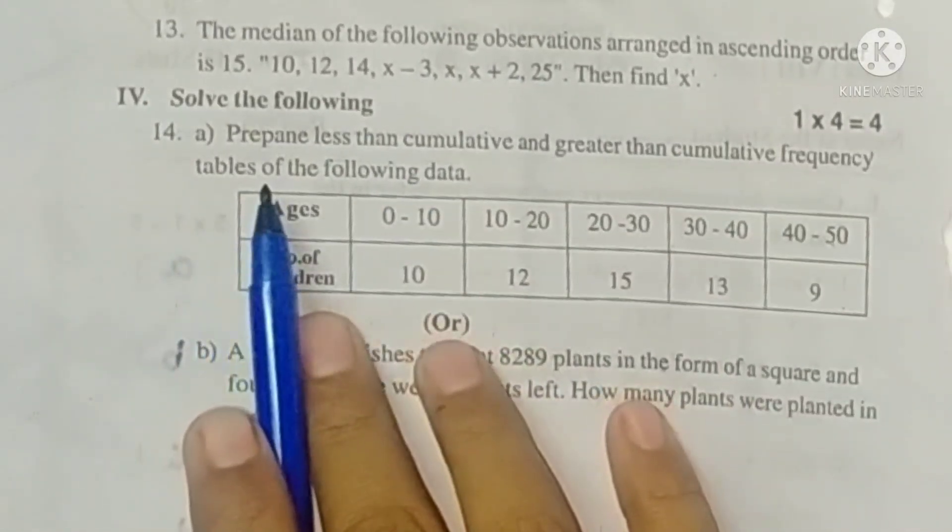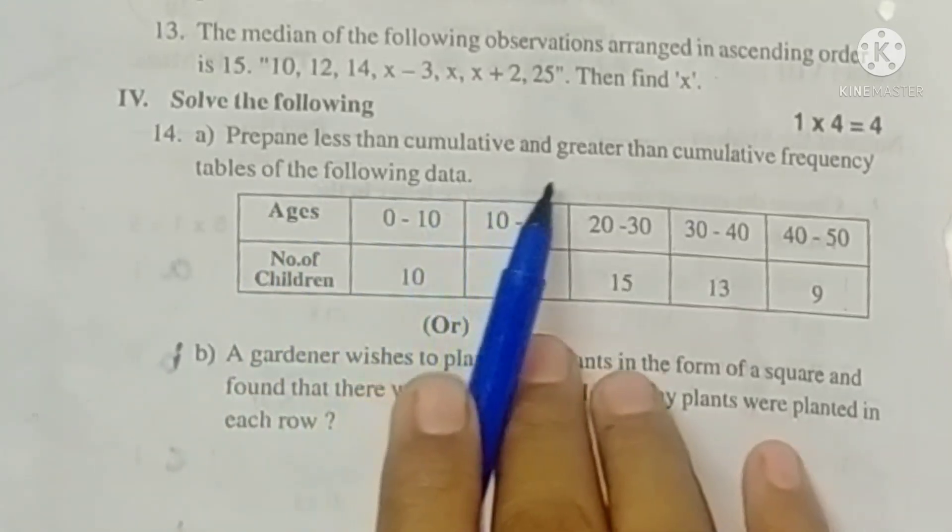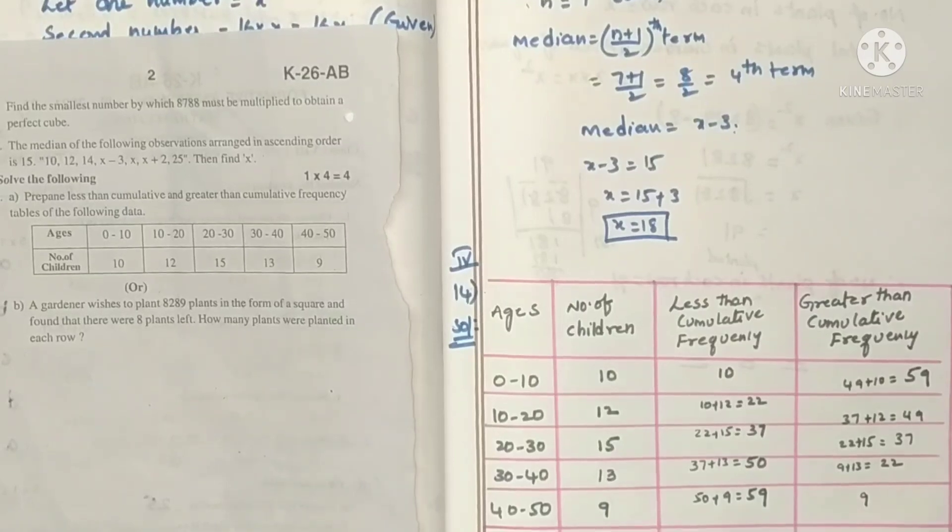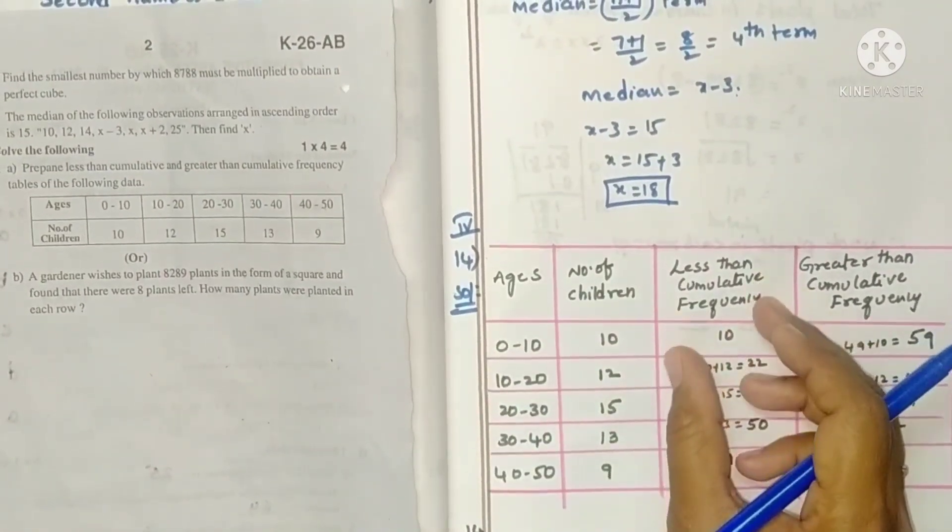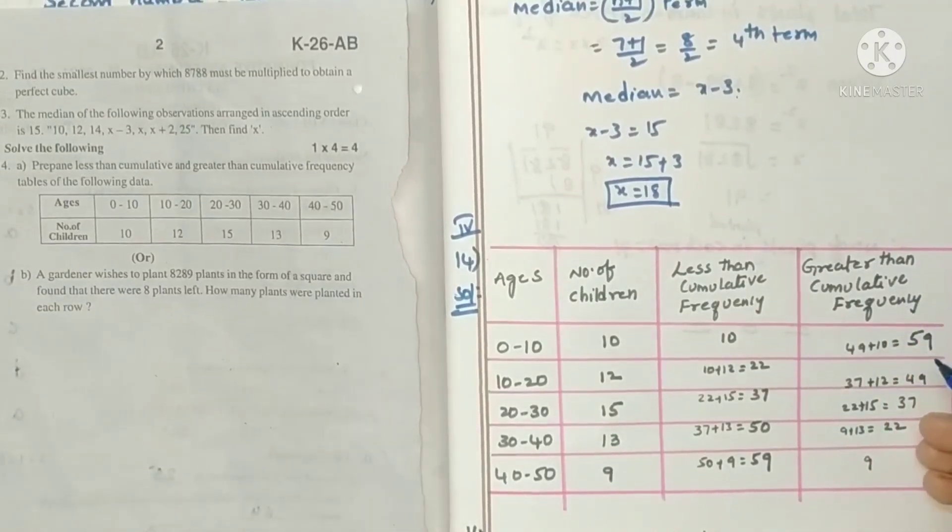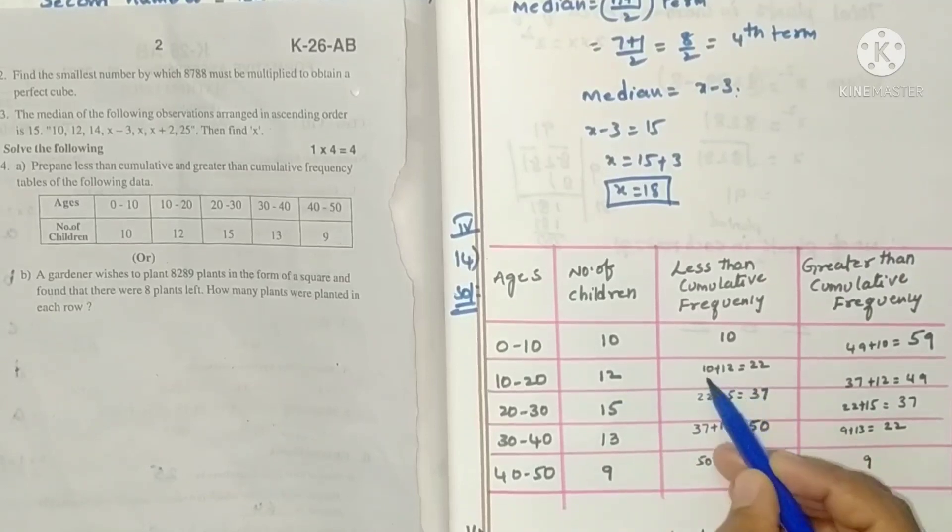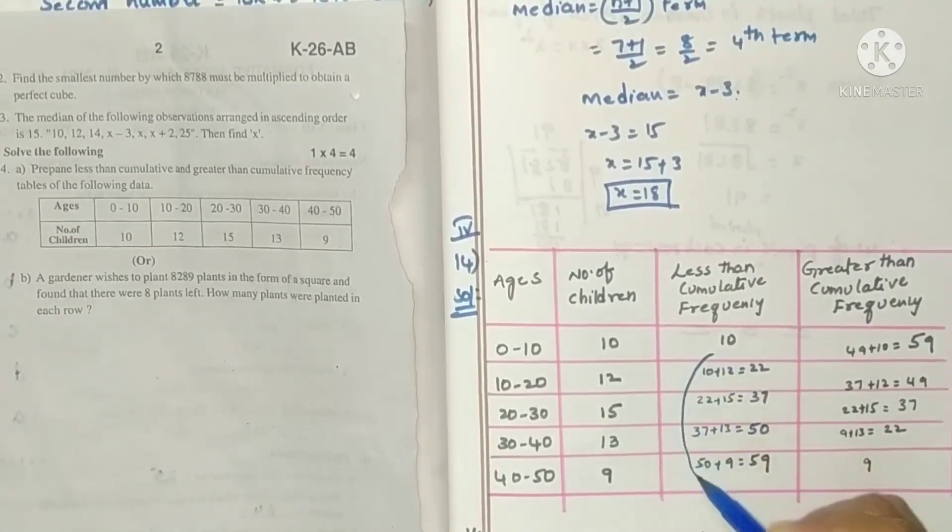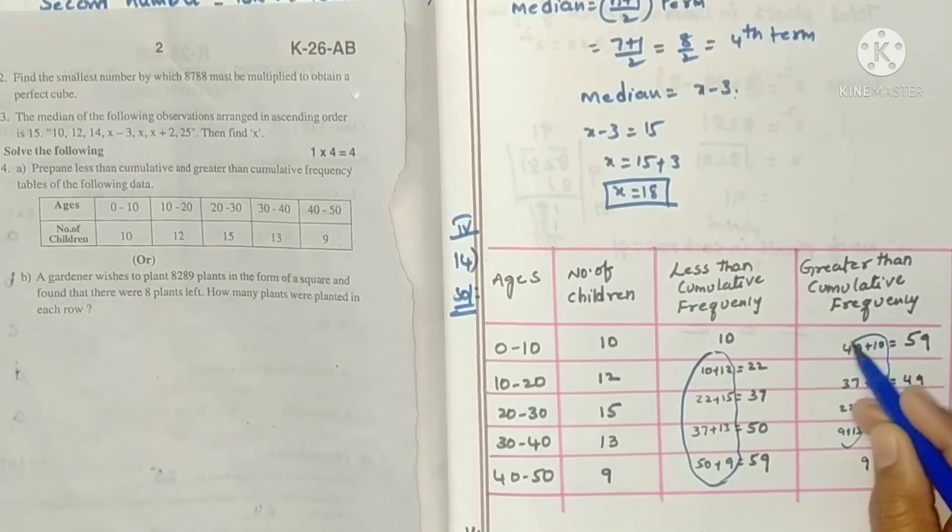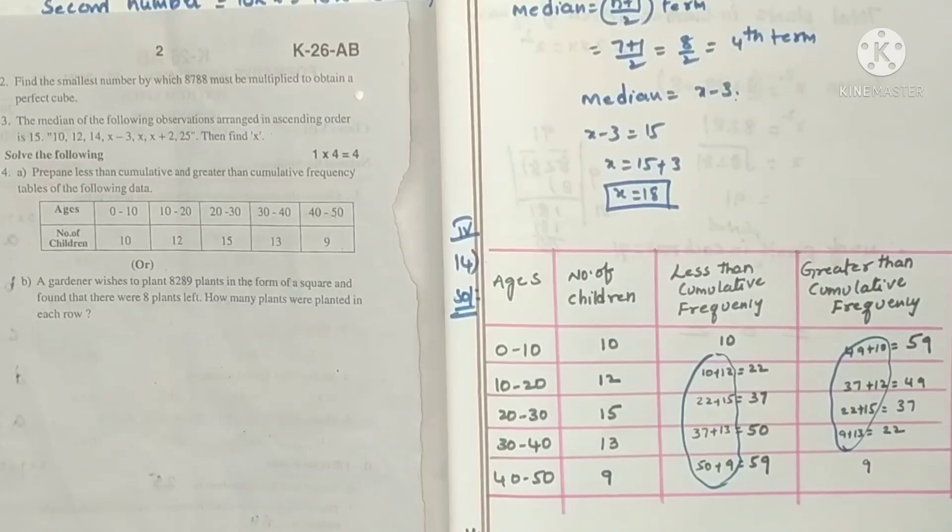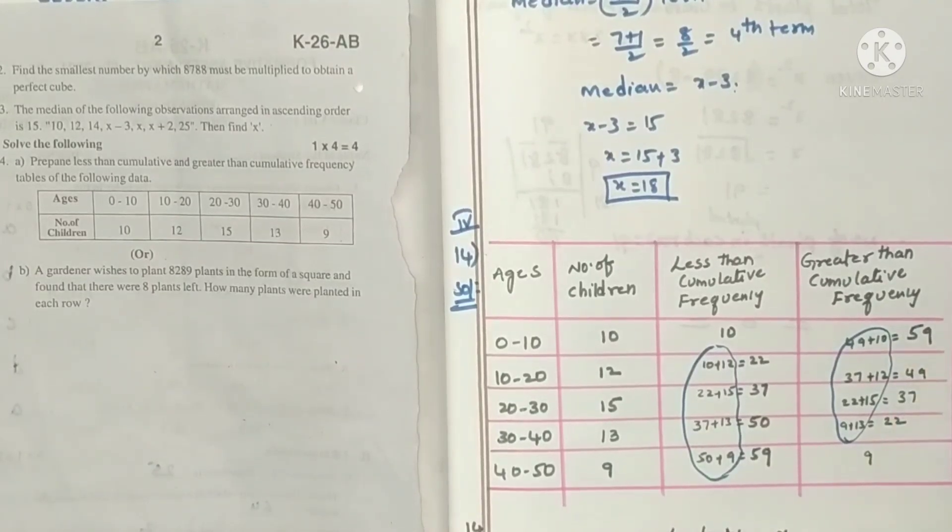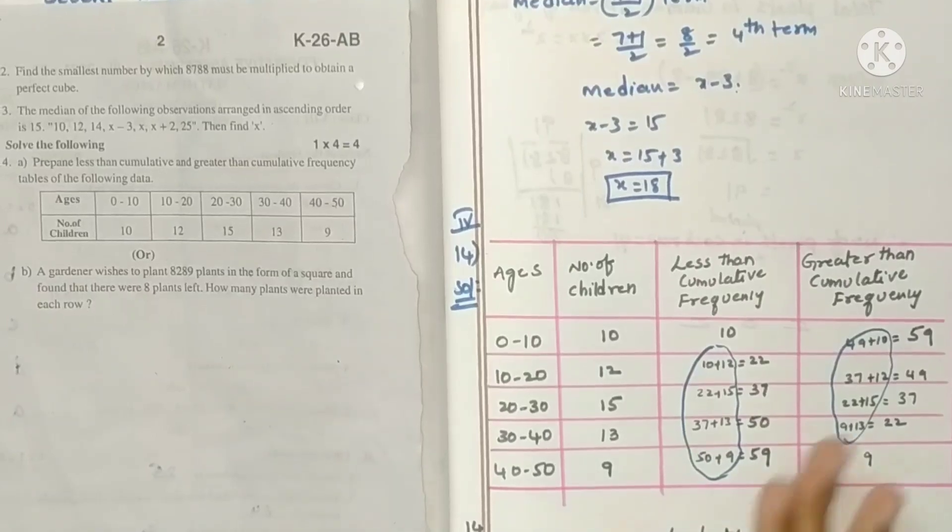Next, solve the following, 14A. Prepare less than cumulative and greater than cumulative frequency tables of the following data. Just write less than and greater than cumulative frequencies. For less than, start with small number and end with big number. For greater than, start with greater number. Here it is 10, 10 plus 12. I am writing this for your understanding. No need of writing this, you can directly write the cumulative values.